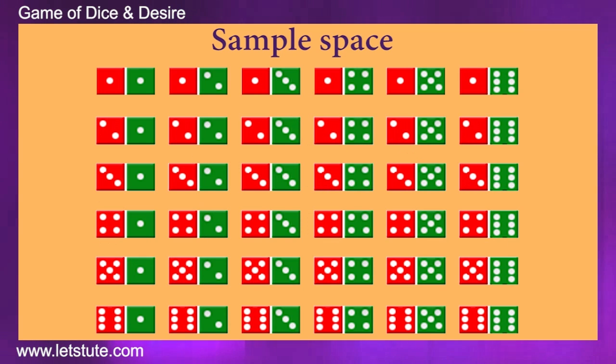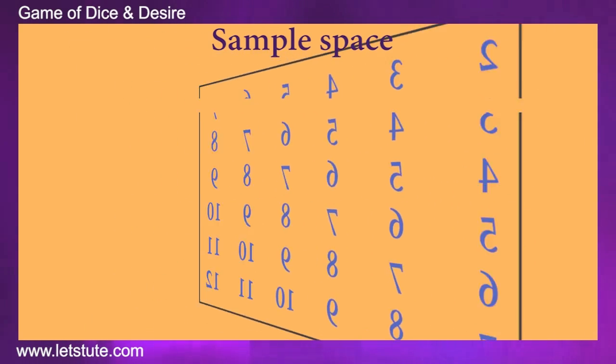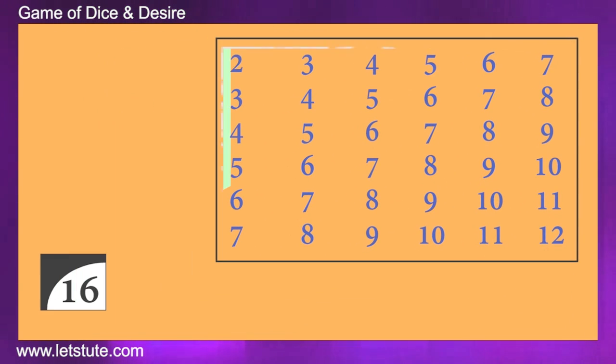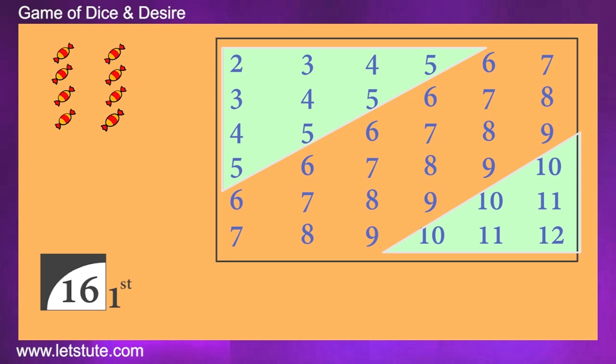Well, let's have a look at this sample space, which shows the summation of the numbers on the uppermost faces of 2 dice rolled. You can see that there are 16 cases when you will get a chocolate.